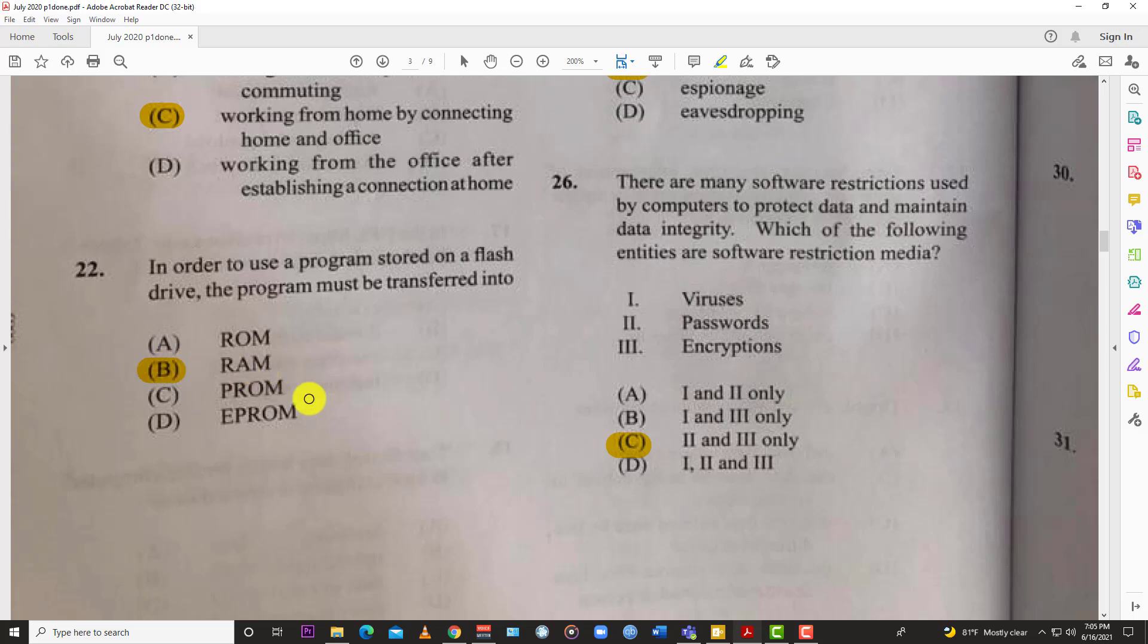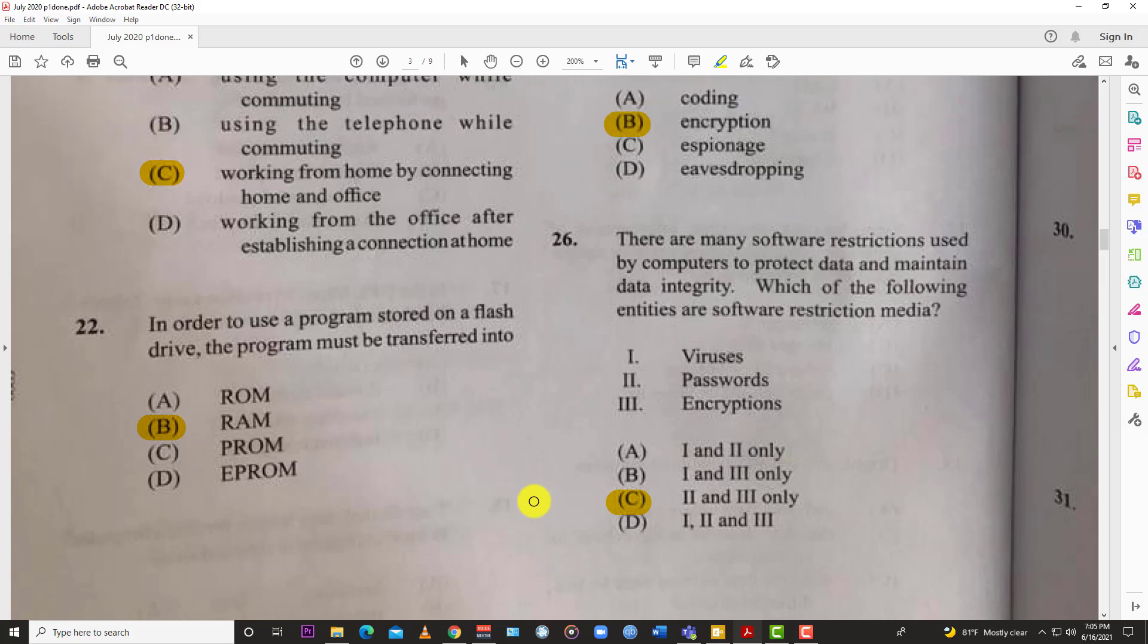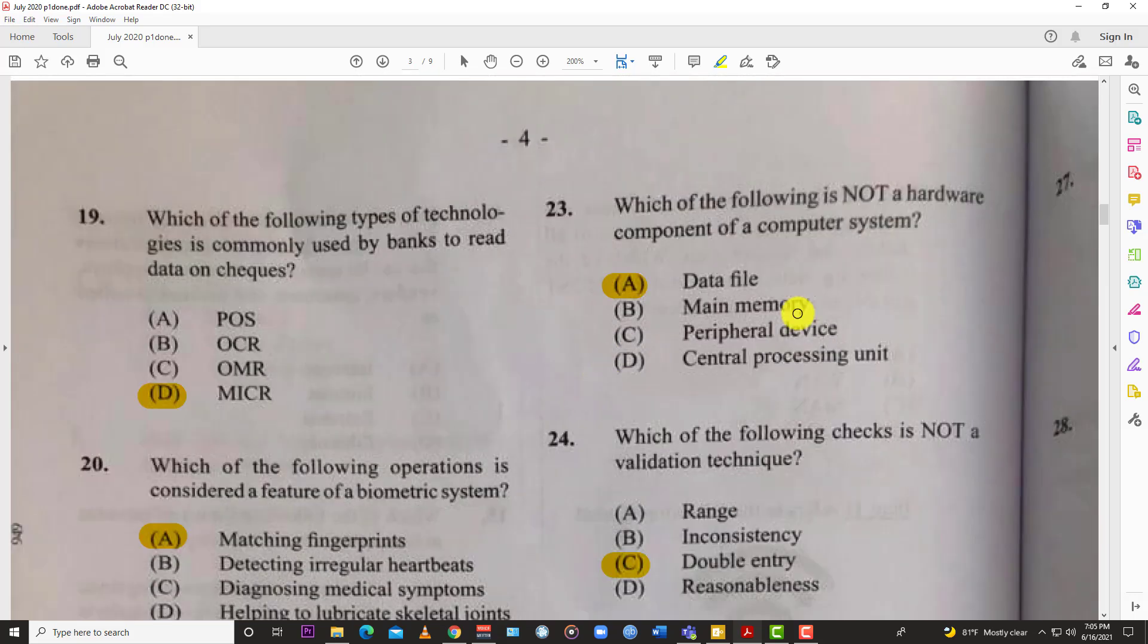Number twenty-three: which of the following is not a hardware component of a computer system? Very easy again. All these you can actually touch - the CPU, the peripheral devices - you can touch them. But a data file, that's totally not hardware, can't touch it. So the answer is A, data file.